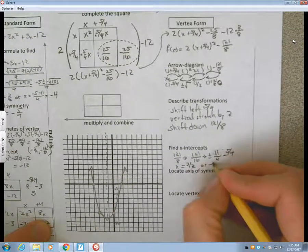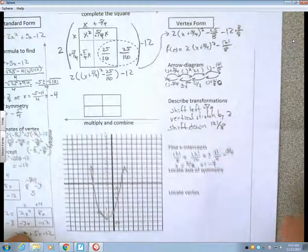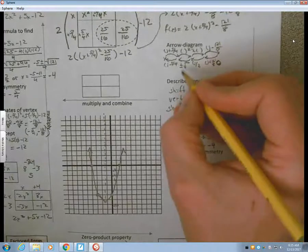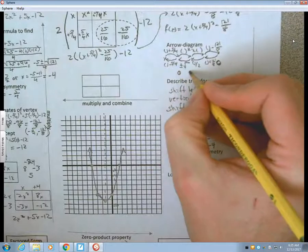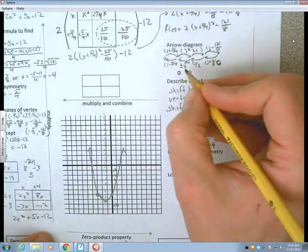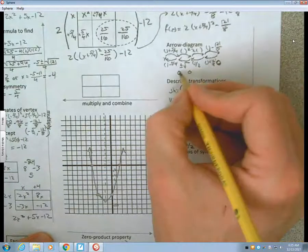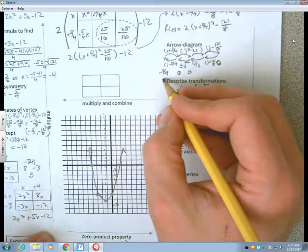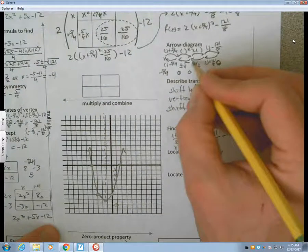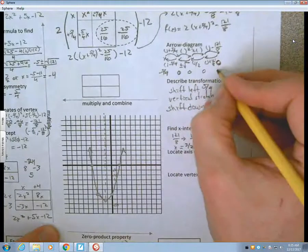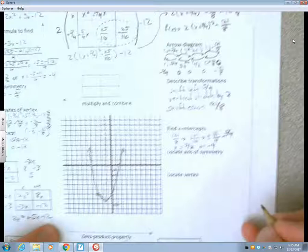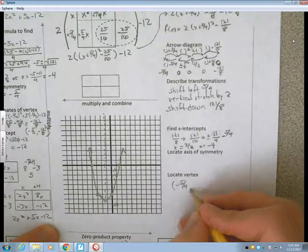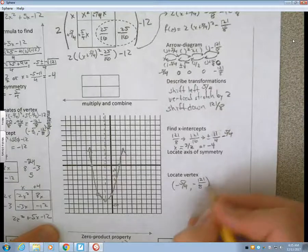I'm going to locate the vertex before the axis of symmetry, because it will give it to me along the way. So, to do that, I go to my arrow diagram. At the parent function, the vertex is at 0, 0. So, following this arrow, that direction, my new x location for the vertex is negative 5 fourths. 2 times 0 is 0. 0 minus 121 eighths is negative 121 eighths. So, my vertex after the transformations is at negative 5 fourths, comma, negative 121 over 8. And, the axis of symmetry, then, is at x equals negative 5 fourths, because it will always pass through the x-coordinate of the vertex.